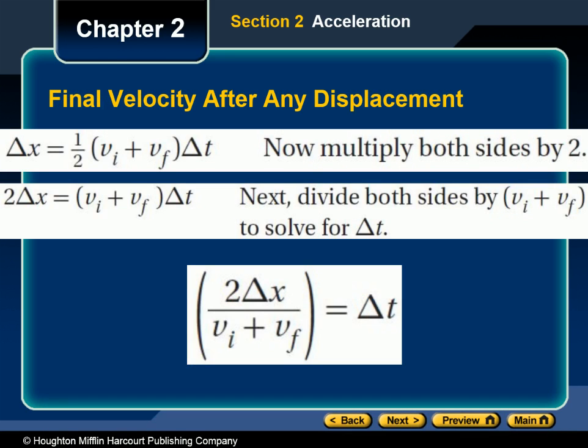Final velocity depends on initial velocity, acceleration, and displacement. So far, all of the equations for motion under uniform acceleration have required knowing the time interval. We can also obtain an expression that relates displacement, velocity, and acceleration without using the time interval. This method involves rearranging one equation to solve for t and substituting it into another equation, making it possible to find the final velocity of a uniformly accelerated object without knowing how long it has been accelerating.